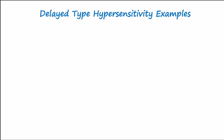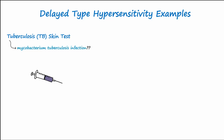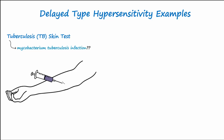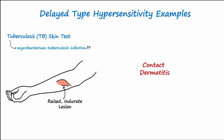Another clinical example of DTH is the type 4 reaction that can result from a tuberculosis, or TB, skin test. TB skin tests are administered to determine whether a patient has been infected with Mycobacterium tuberculosis. Protein components of the bacteria are injected into the skin, and if the patient has been previously infected, the immune system will attack the injected protein components via the type 4 mechanism. A positive test shows a significantly raised lesion at the site of injection that forms within hours to days.